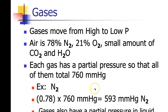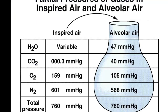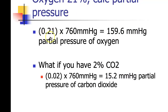Gases also have a partial pressure in liquid. For oxygen, if we take a calculation of partial pressure, we see that 0.21 — 21 percent oxygen — times 760 gives us 159.6 millimeters of mercury as the partial pressure of oxygen. And what about CO2? 0.02 times 760 gives us 15.2 for the partial pressure of carbon dioxide.